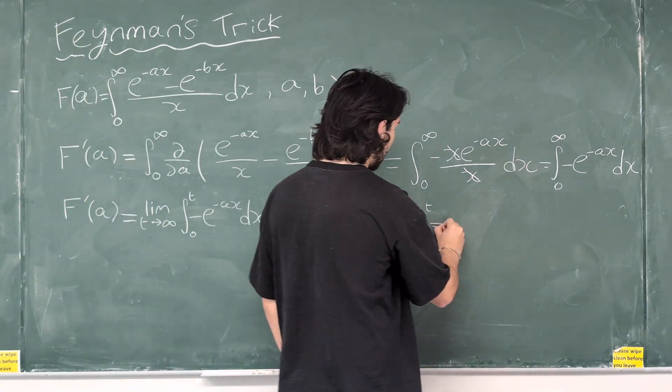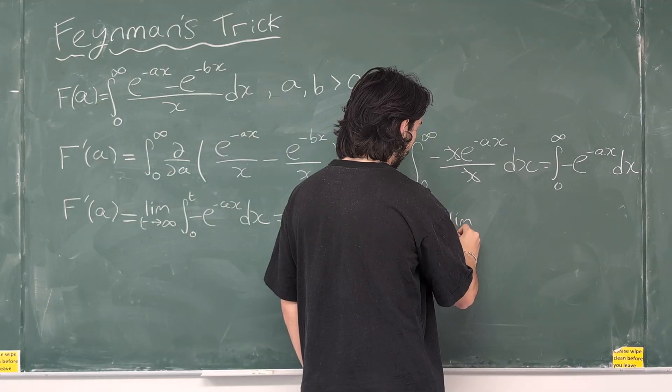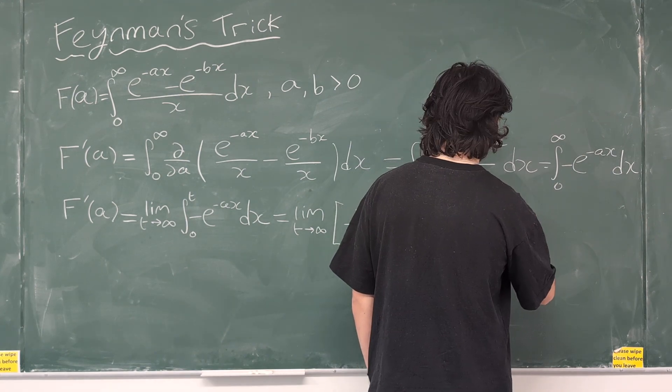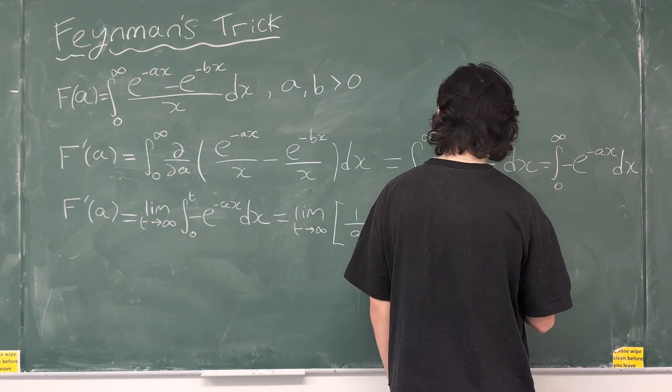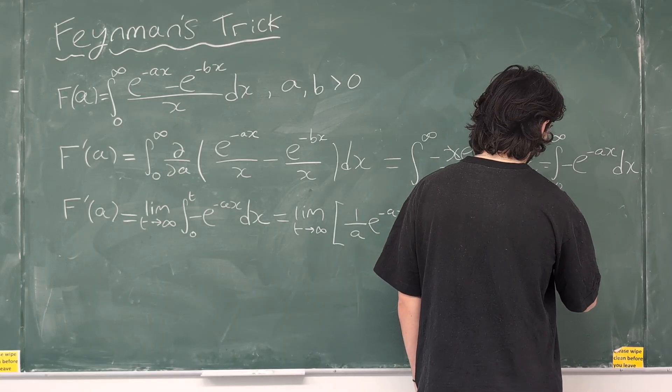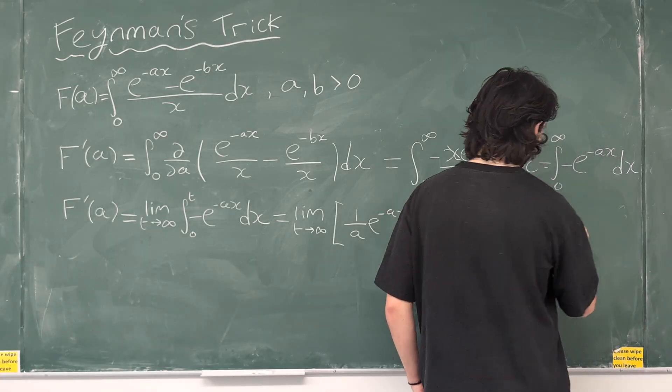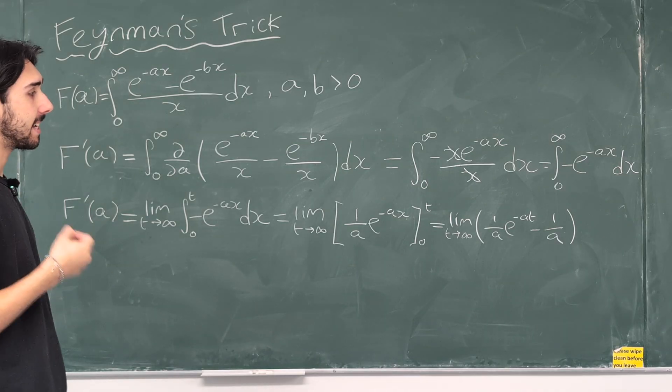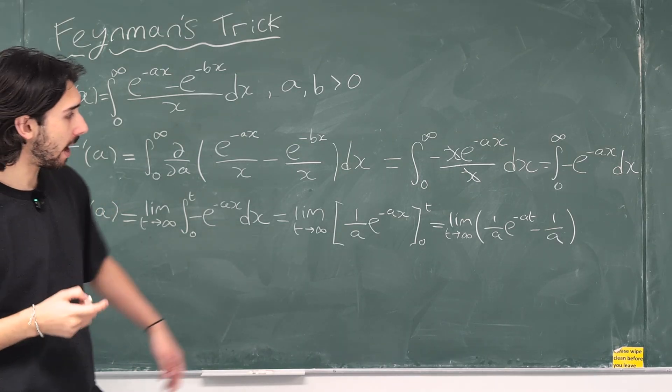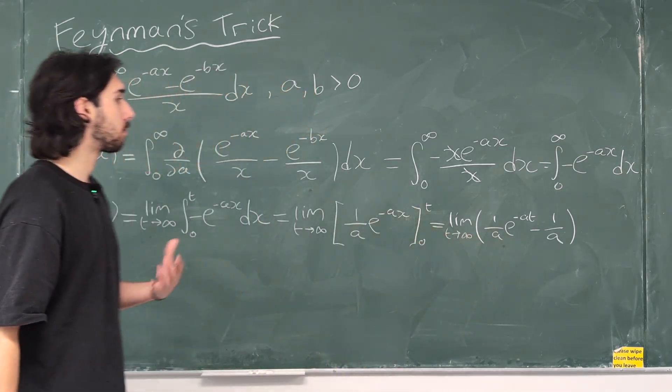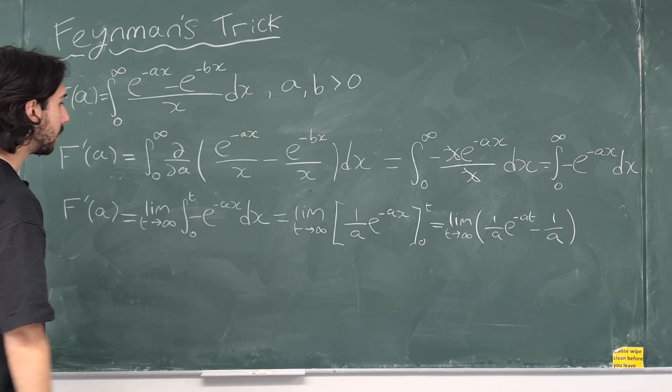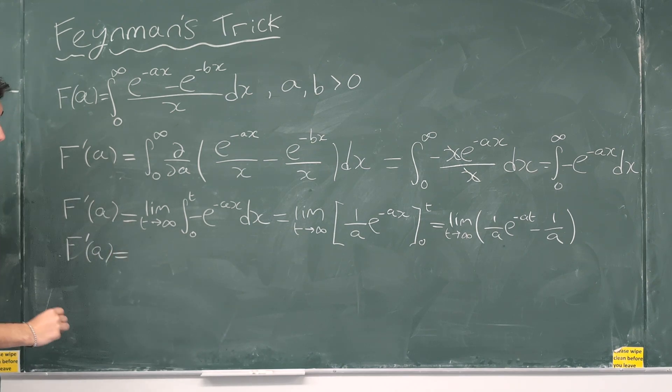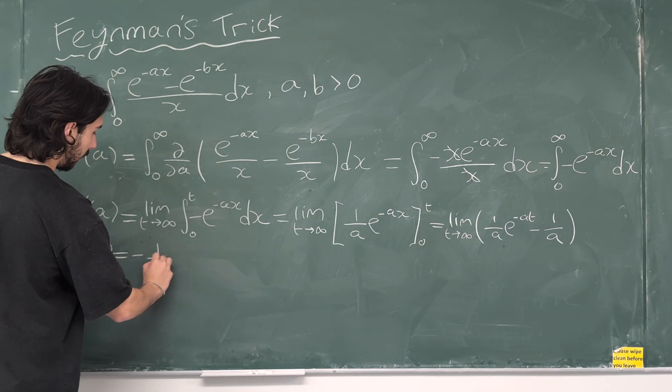And then we're going to evaluate it. So, this is equal to the limit as t approaches infinity of 1 over a e to the minus a t minus 1 over a times e to the 0. And as t approaches infinity, remember a is a positive number, as t approaches infinity, that first term there, 1 over a e to the minus a t is going to approach 0. So, we're going to end up getting that the derivative of f of a is equal to just minus 1 over a.